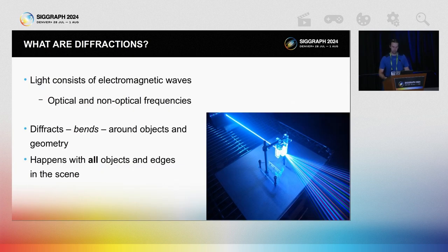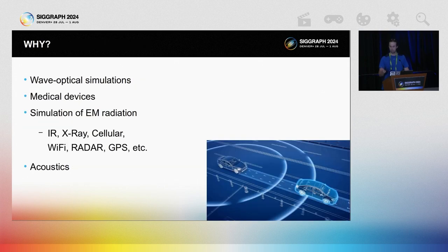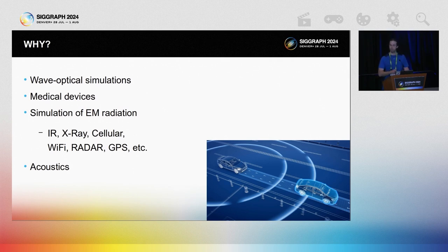In other words, free space diffraction is when propagating light is partially occluded by geometry, upon which it diffracts and figuratively speaking bends around geometry. This happens everywhere, all the time, with all objects and all edges. This is interesting because free space diffractions produce distributions of energy that at times heavily depart from the ray optical prediction.